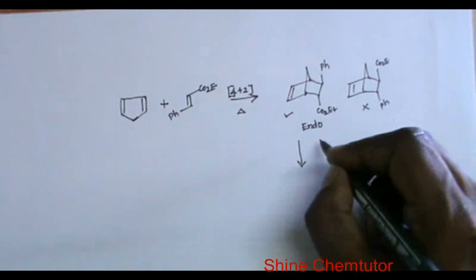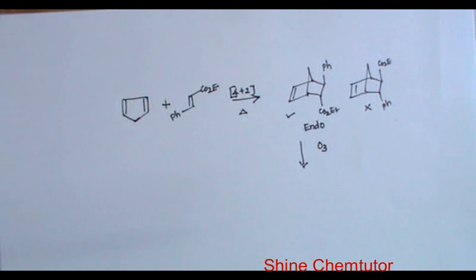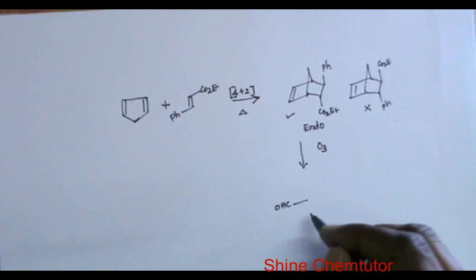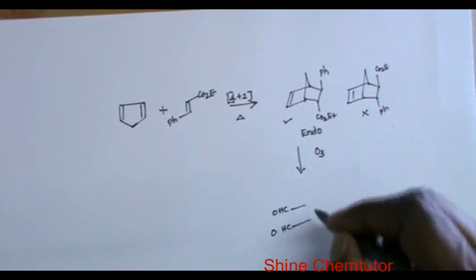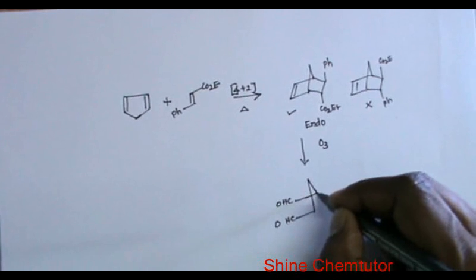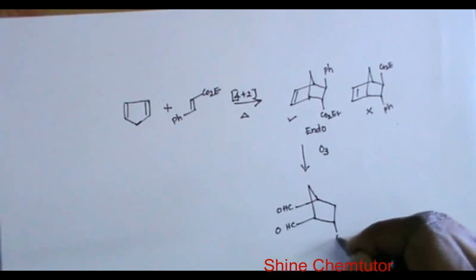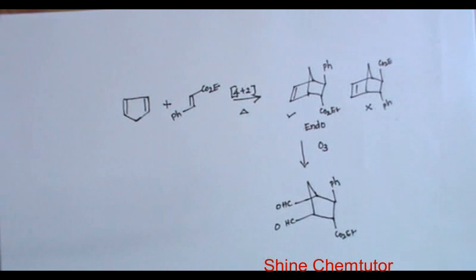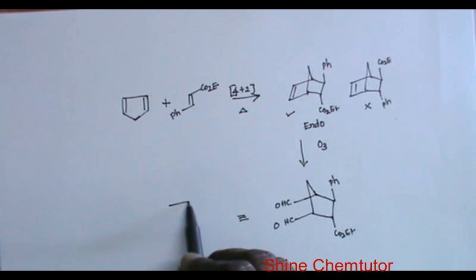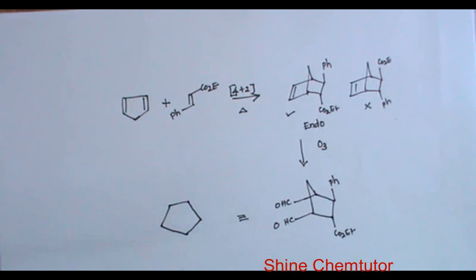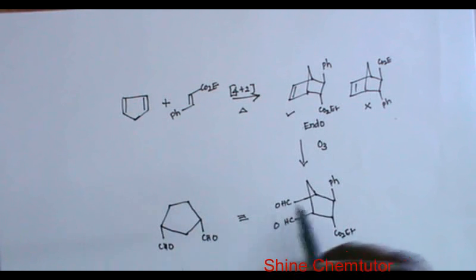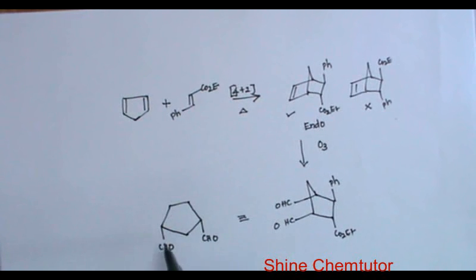This compound is subjected to ozonolysis. Since you may be very familiar with ozonolysis, the double bond will be converted into a ketone. Since we have a monosubstituted alkene, the product whatever we get will be like this. Look at this — these two CHO groups are at the bottom; they are cis, they are in the same direction. So I have mentioned them at the bottom.